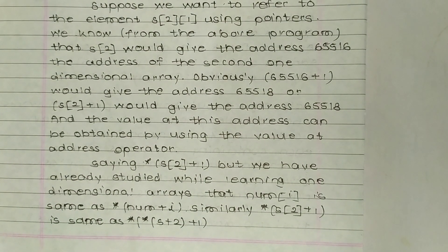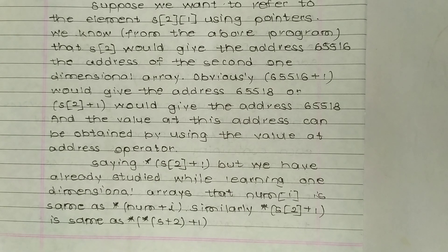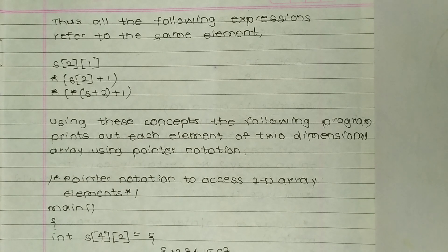We have already studied, while learning one-dimensional arrays, that num[i] is the same as *(num + i). Similarly, s[2][1] is the same as *(s[2]+1), which is the same as *(*(s+2)+1). Thus all the following expressions refer to the same element s[2][1]: *(s[2]+1) and *(*(s+2)+1). Using these concepts, a program can print each element of a two-dimensional array using pointer notation.